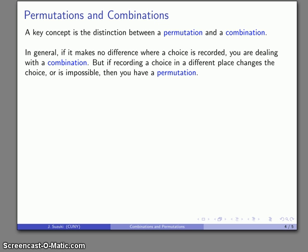On the other hand, if recording a choice in a different place changes the choice that we've made, or in some cases might actually be impossible, then what we're dealing with is a permutation.